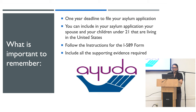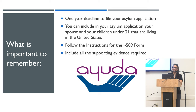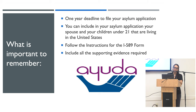What is important to remember: you have to file asylum before one year after you come to the United States. You can include your spouse and children under 21 who are living in the United States in your application. You must follow the instructions for the I-589 form and include all the supporting evidence required.